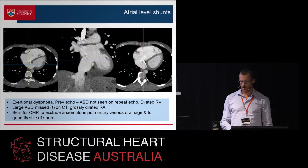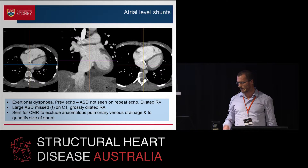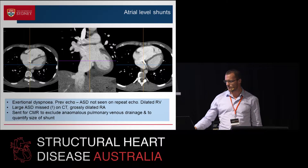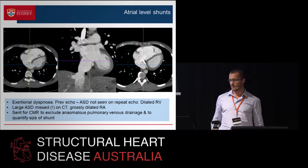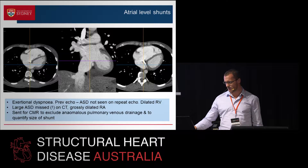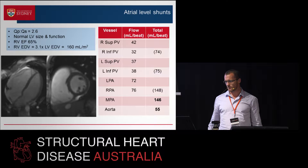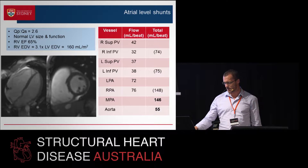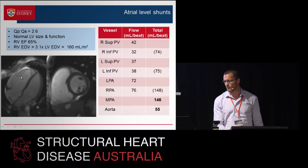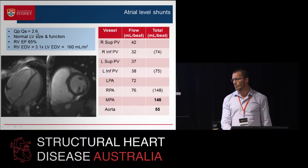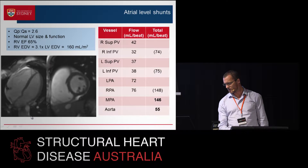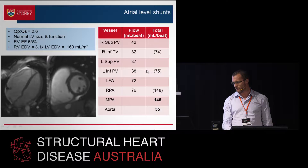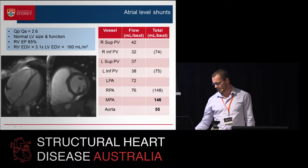This is a patient who presented with exertional dyspnea. An external echo had seen an ASD, but at the referring institution they couldn't find it. They had a CT which was reported as normal, which it wasn't — there's clearly an ASD, probably an inferior sinus venosus type. They were sent to us to quantify the shunt. We reviewed the CT afterwards and saw it, but we also saw it with MR. You can see a hugely dilated right ventricle — about three times the left side — normal function and a QP:QS of 2.6. Our flow audit showed massive flow through the pulmonary vessels indicative of shunt and no evidence of anomalous drainage.